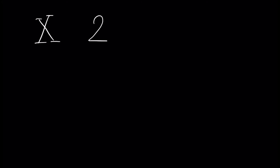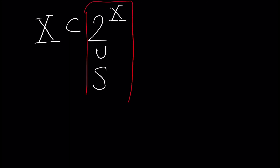Assume we have some set X, and we have the power set of this set X, which is by definition the set of all subsets of X. In particular, X is also inside the power set. Assume we have some family of subsets of the set X, which is inside the power set. We are now ready to define what the sigma algebra generated by this set of subsets S is. Assume we have some sigma algebra G, and S is inside this G.